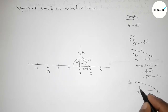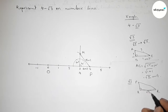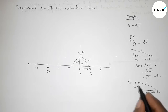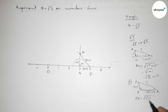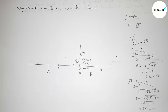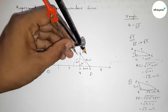Next we have to represent root 3. Roughly drawing a right angle triangle PQR with base equal to root 2 units and height equal to 1 unit. By the Pythagorean theorem, PR equals root over base squared plus height squared, which gives 2 plus 1, so PR equals root 3 units.